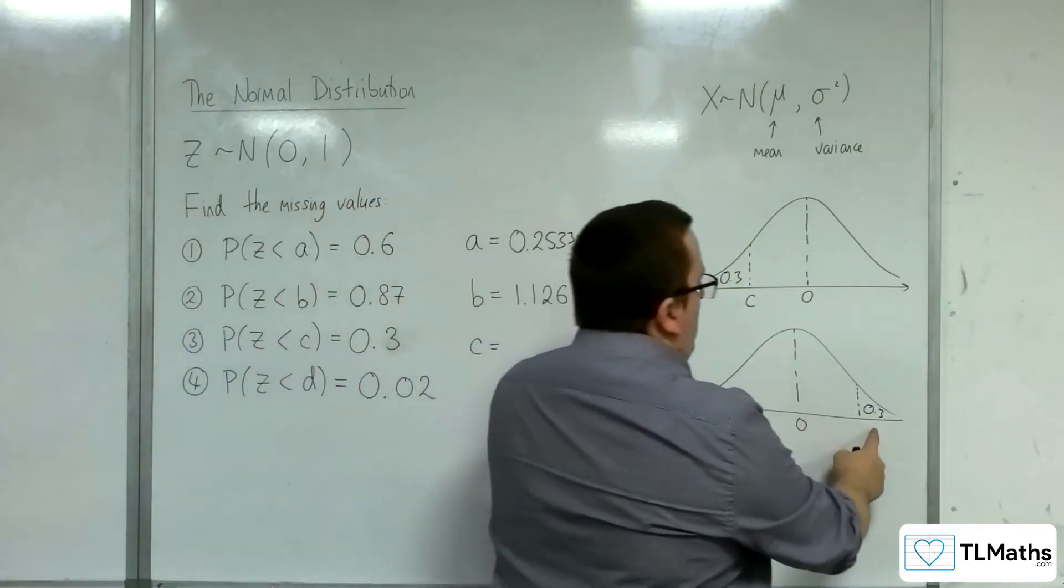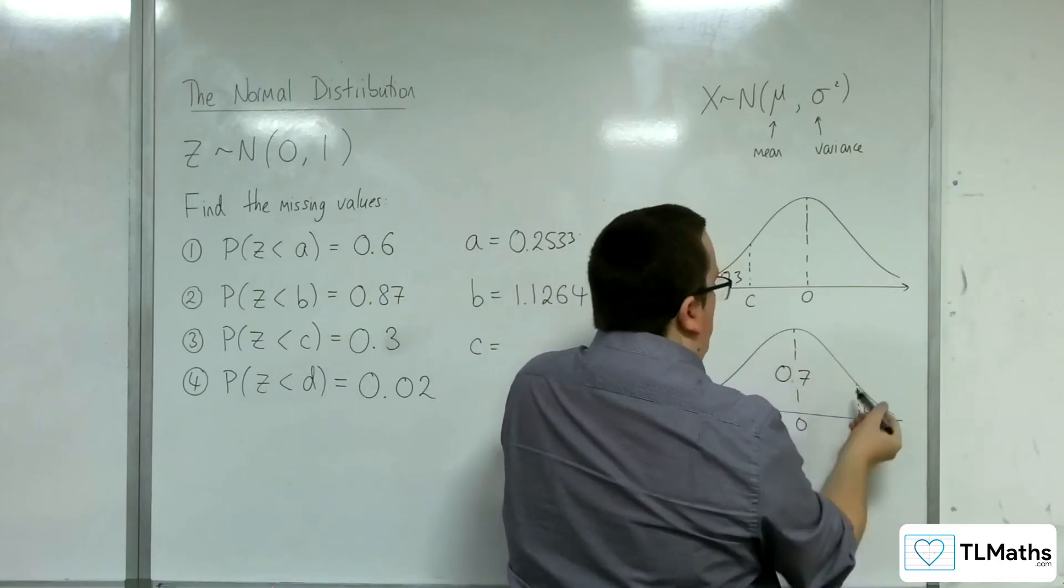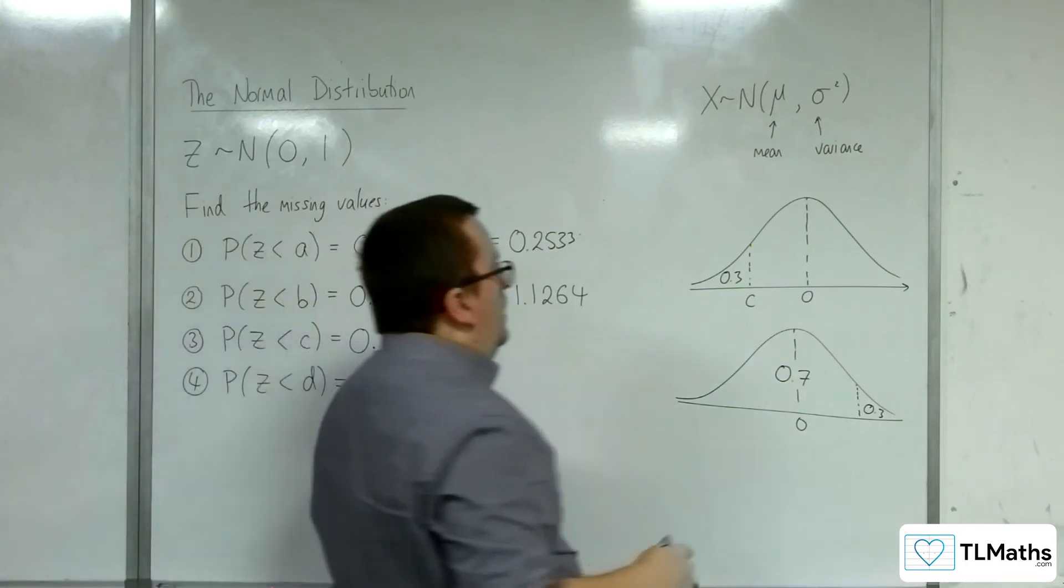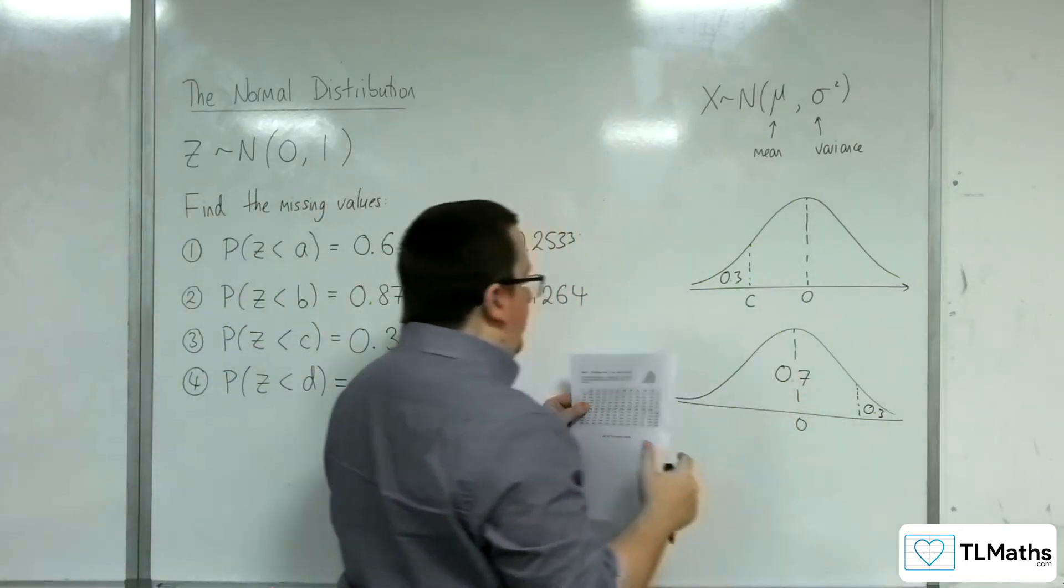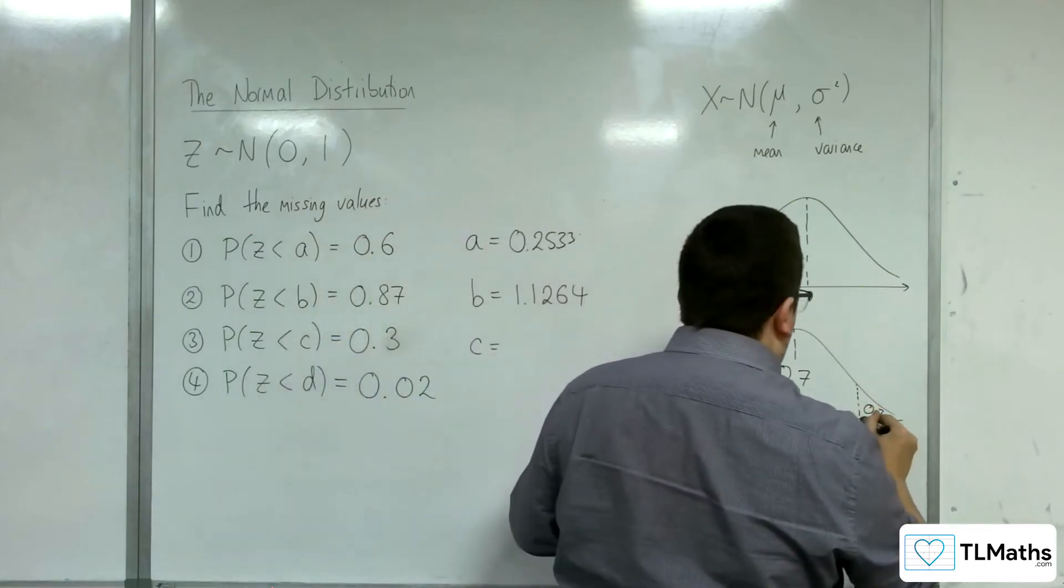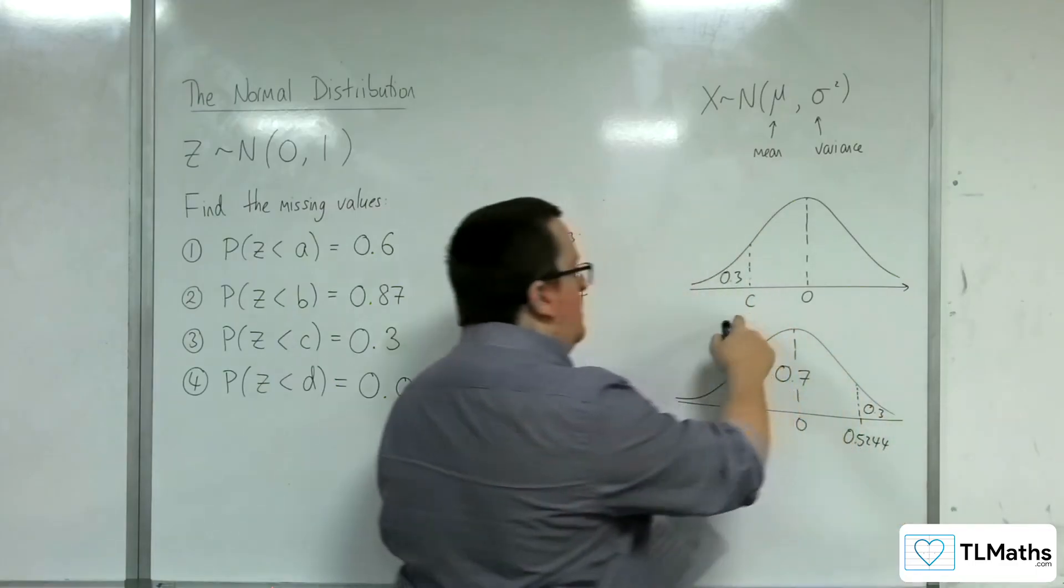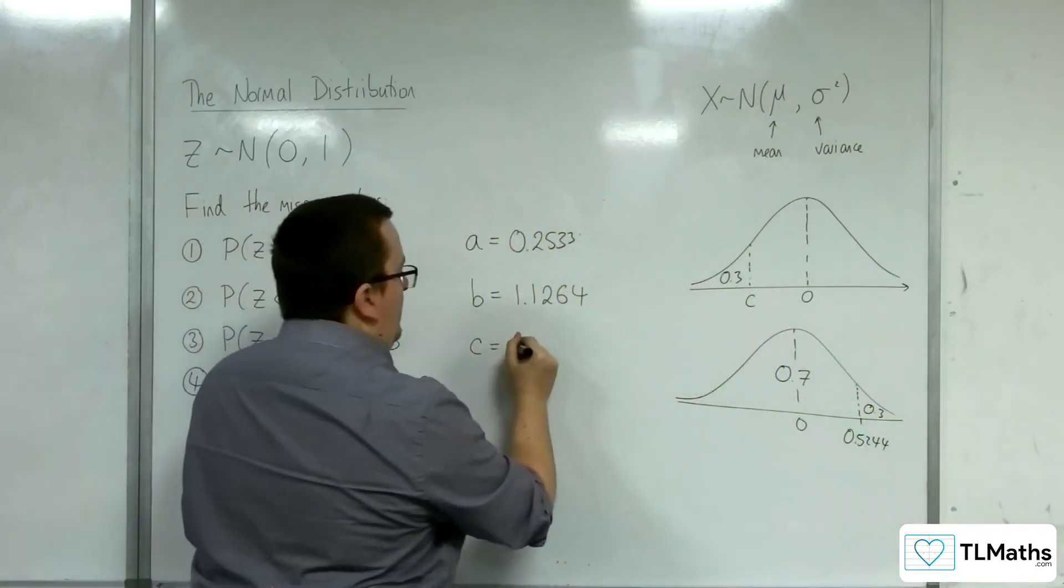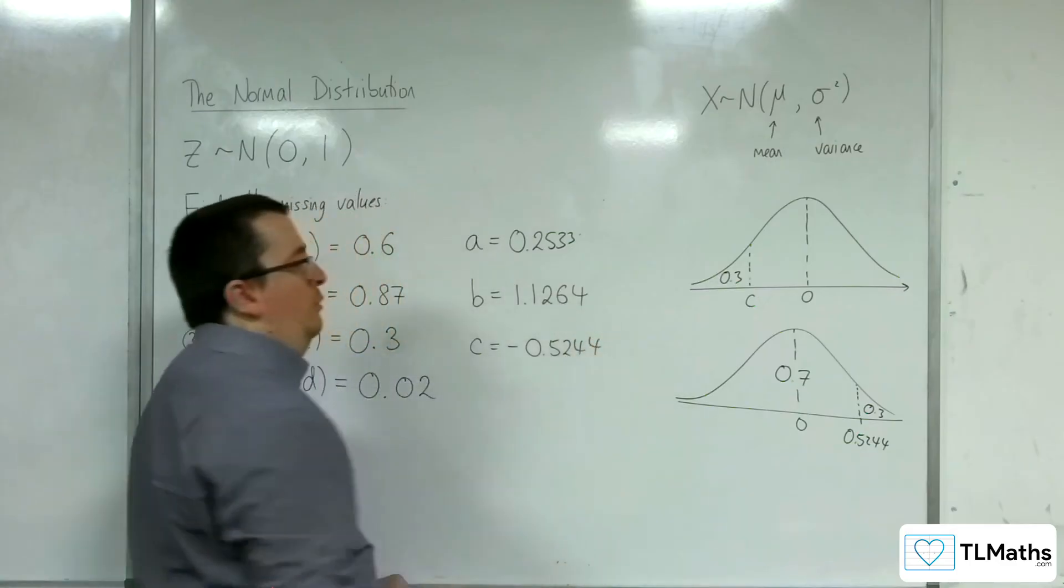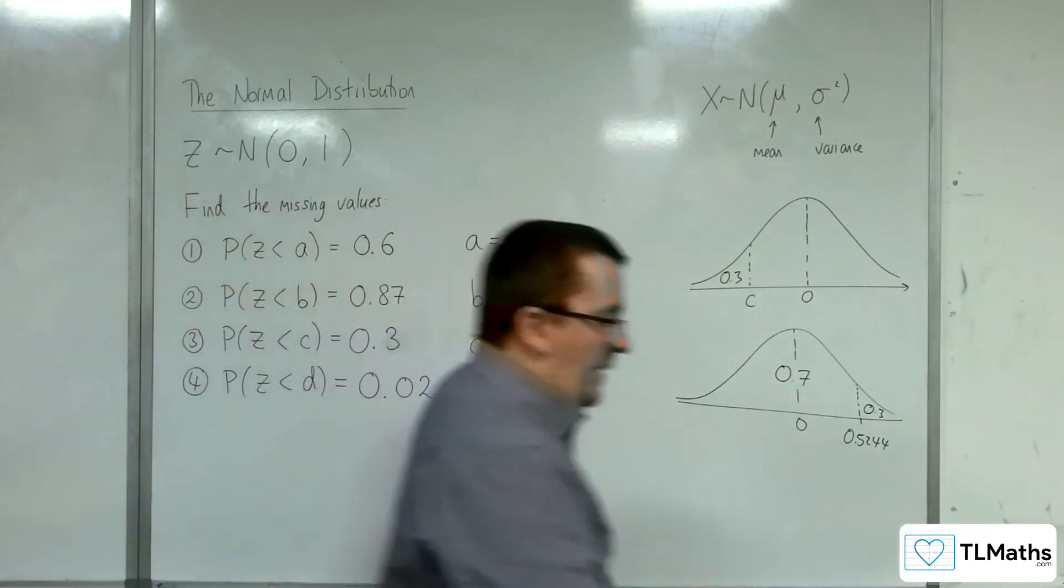Now, I still can't look up 0.3, but that would mean that this region is 0.7. Because, remember, the whole thing's got to be 1. So, if I look up 0.7 on my tables, I get 0.5244. So, that's 0.5244 there. So, that would mean that C would have to be negative 0.5244. That's how we can deal with that situation.